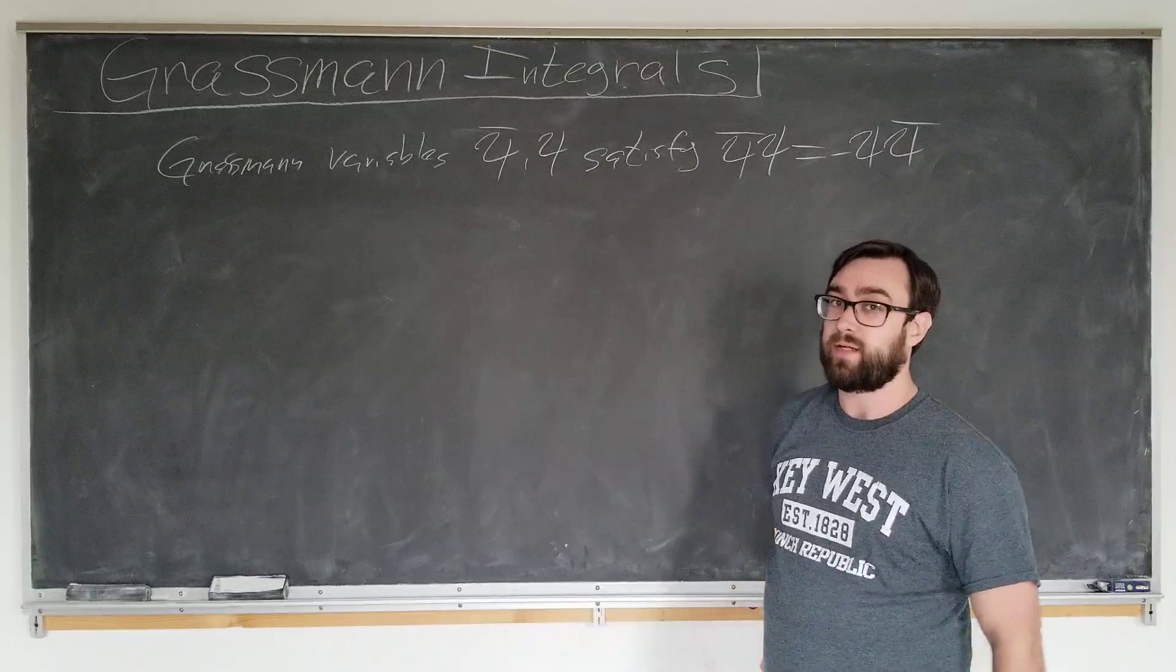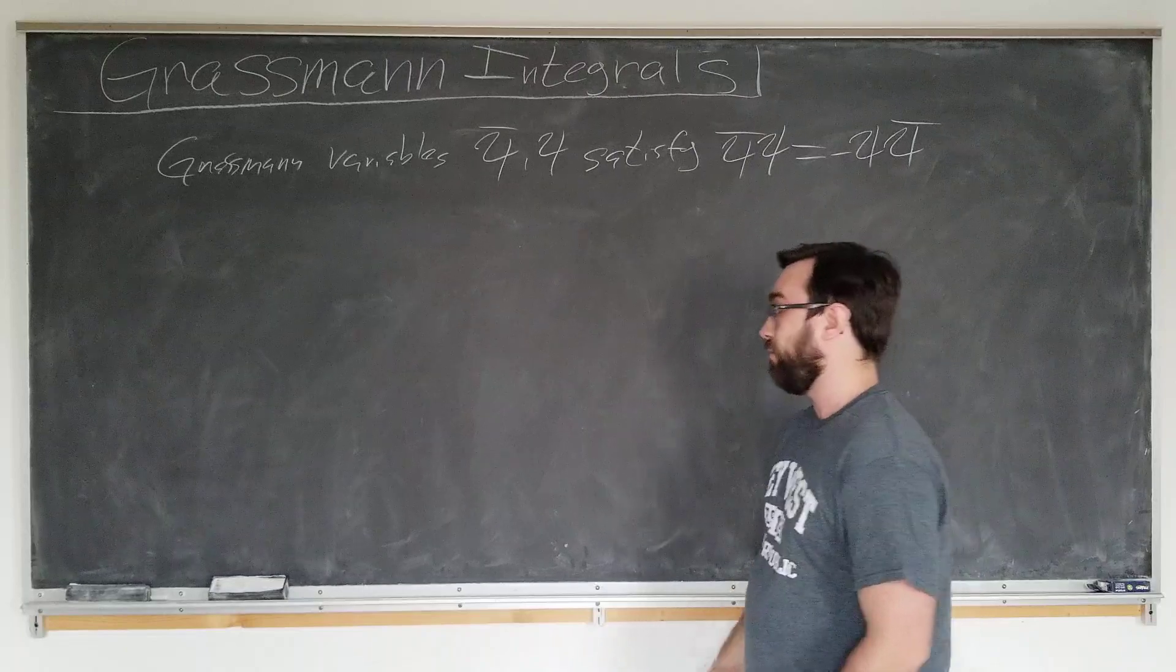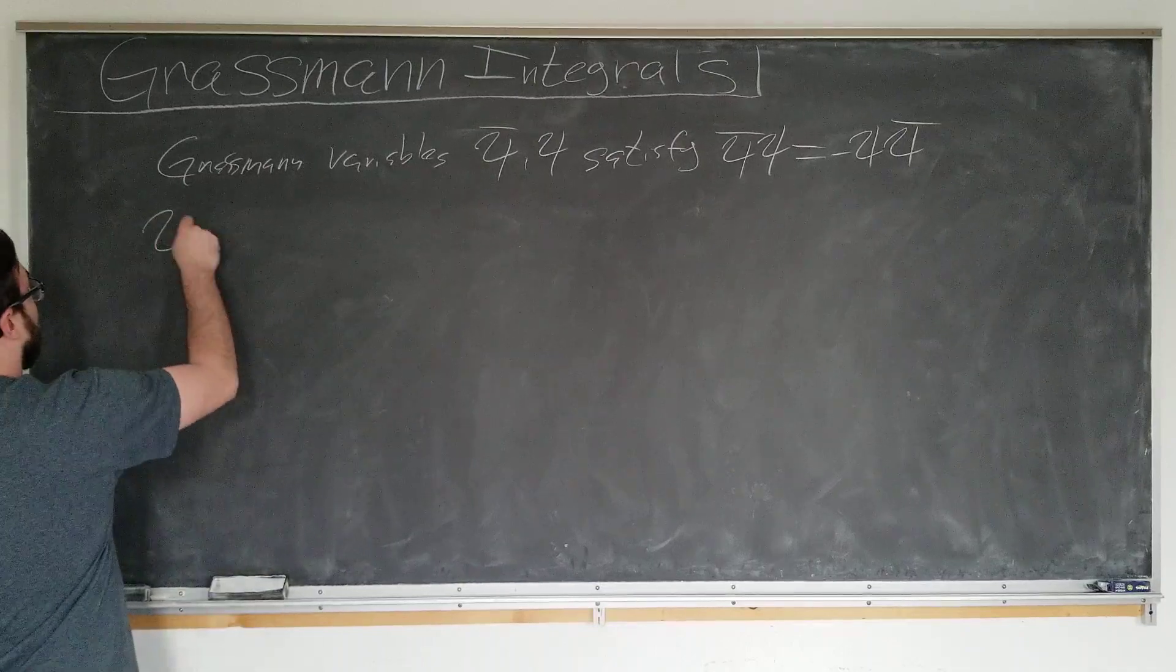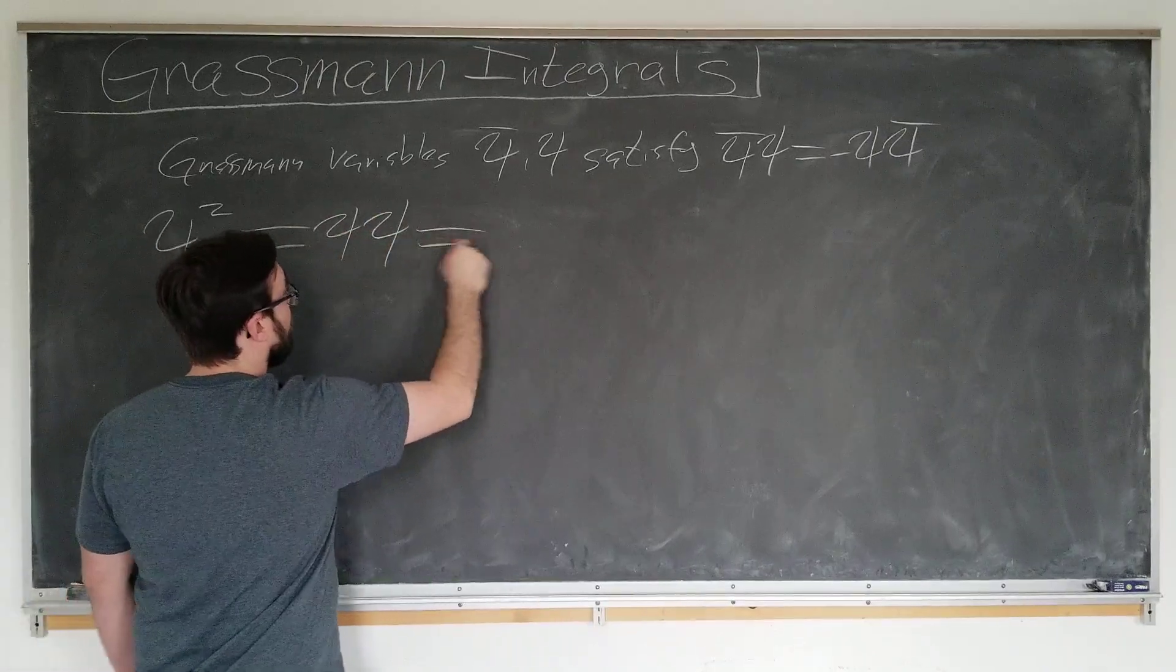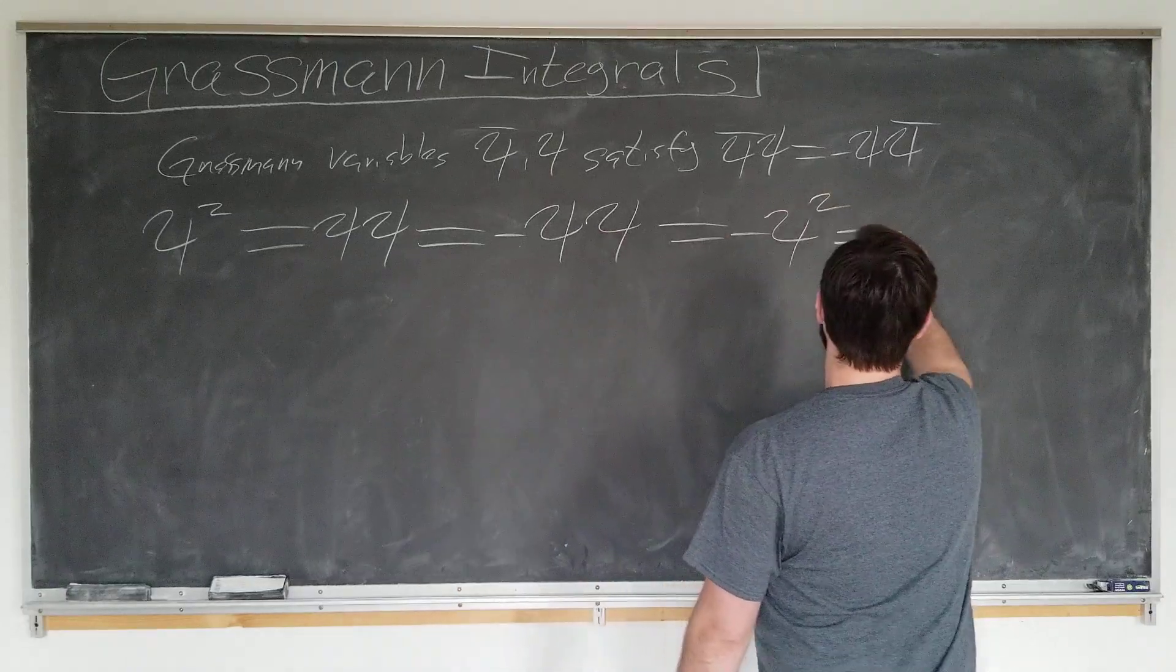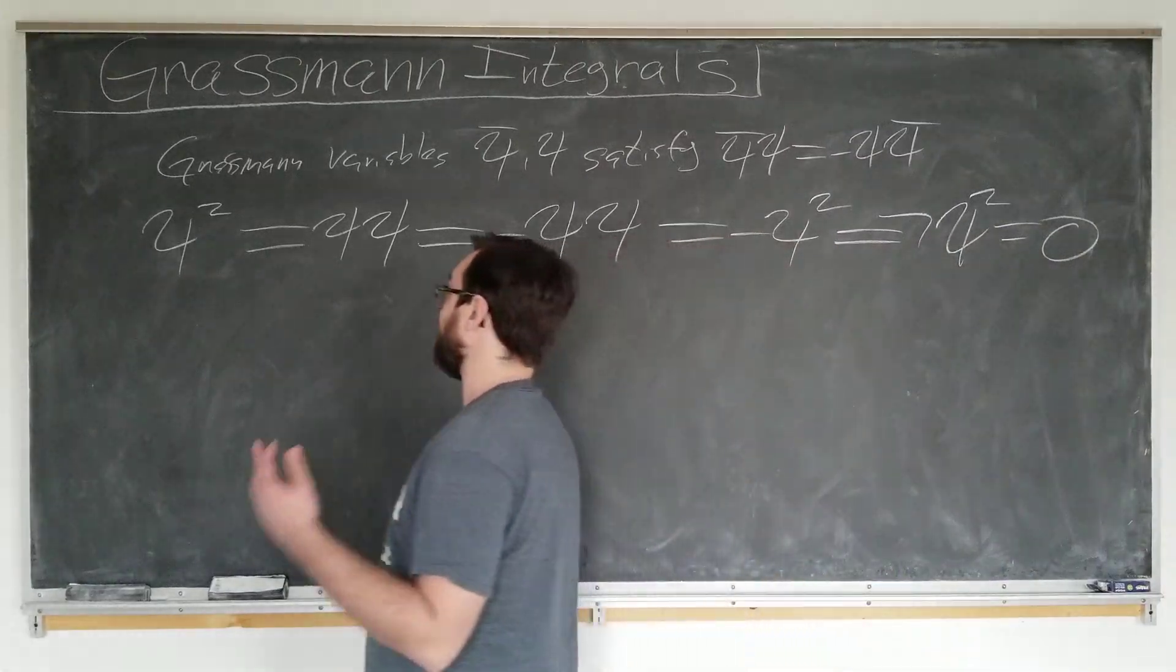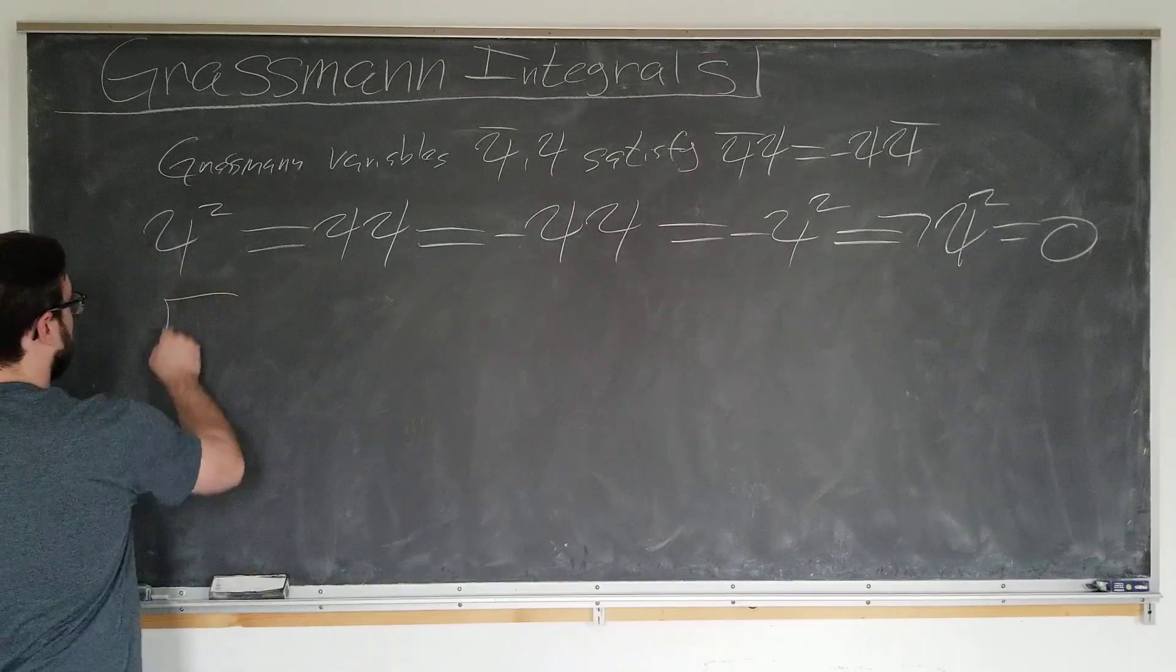We're certainly used to seeing this in matrices, however we're not used to seeing this in variables or numbers. We have to integrate over these, and we can't integrate over a matrix. From this property we can derive some other simple ones, like any element of the Grassmann algebra squared equals psi psi, which is simply minus psi psi, which is minus psi squared, or psi squared equals zero. So they all square to zero, so they're all small in the same sense that infinitesimals square to zero.